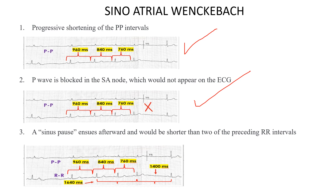Third, the sinus pause that follows would be shorter than two of the preceding PP intervals. Looking at the two preceding PP intervals, the pause is shorter — approximately 240 milliseconds shorter — which is a significant difference. This criterion is also met. This ECG fulfills all criteria for sinoatrial Wenckebach.